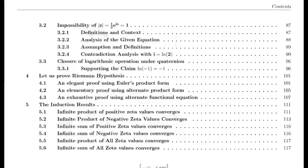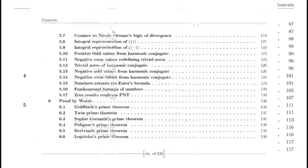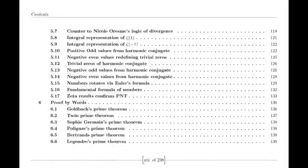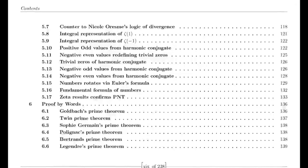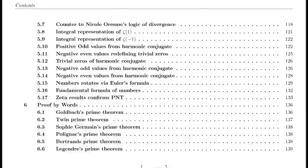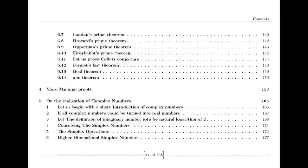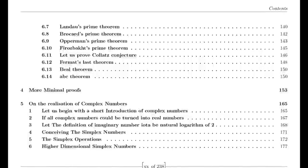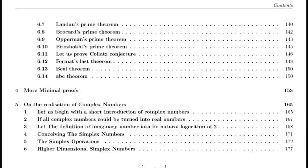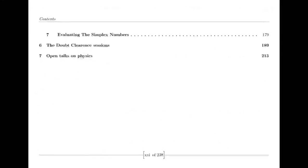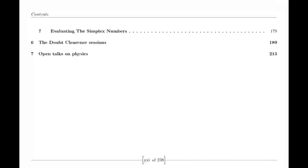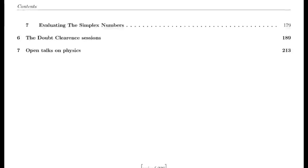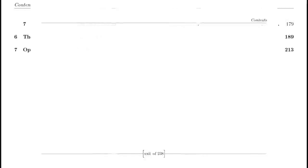Dirichlet eta function. Riemann was also influenced by the Dirichlet eta function, defined by an alternating series. This function is closely related to the zeta function and provides valuable insights into its behavior, particularly for values of s less than 1. The relationship between the eta and zeta functions is encapsulated in a simple formula involving the gamma function and powers of 2, helping to understand the zeta function's properties across different regions.